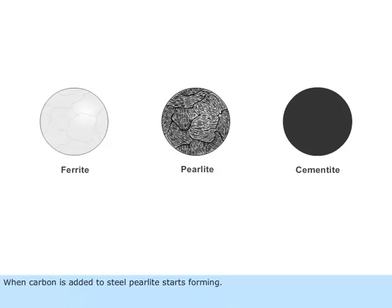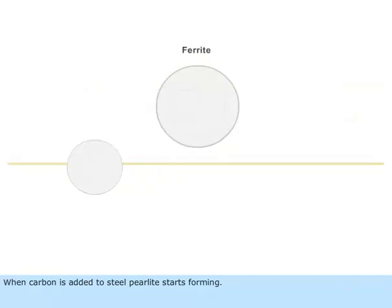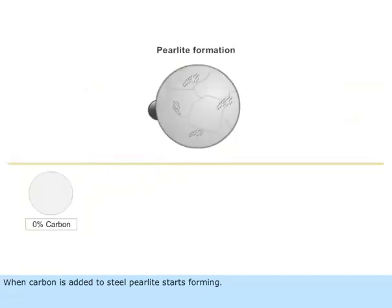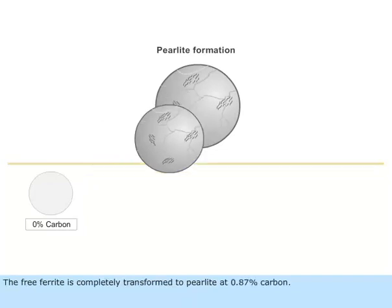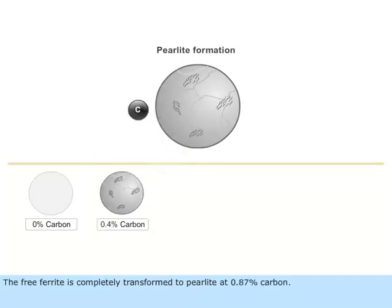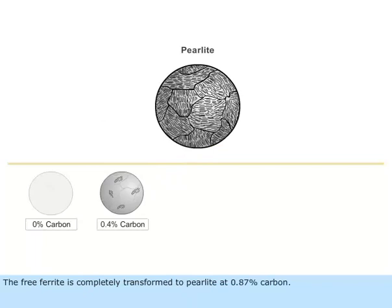When carbon is added to steel, pearlite starts forming. The free ferrite is completely transformed to pearlite at 0.87% carbon.